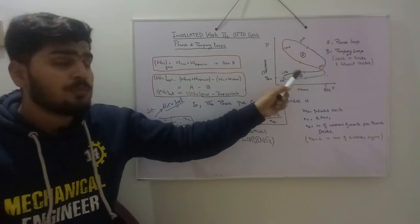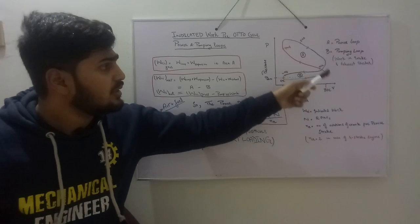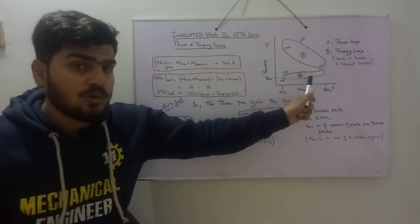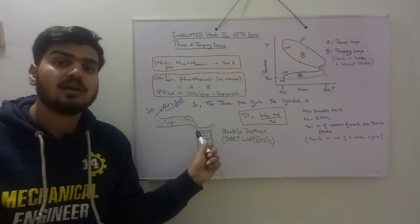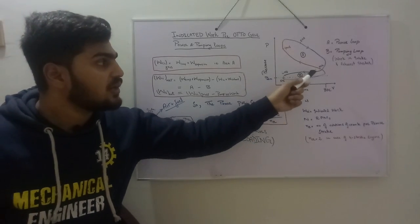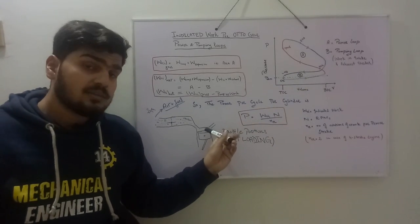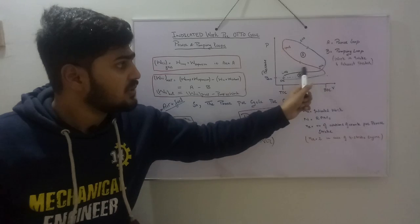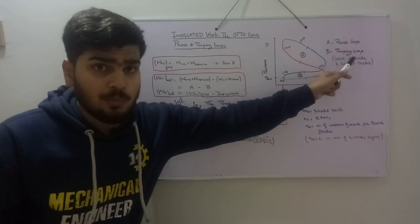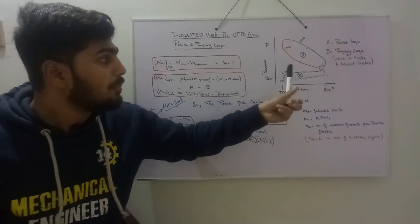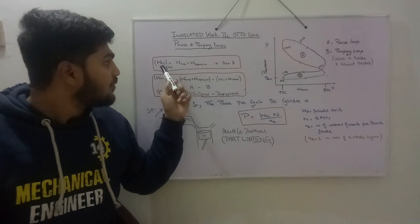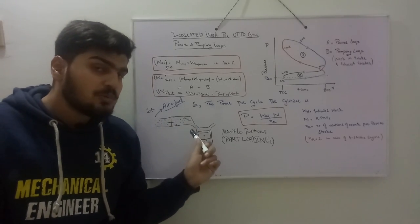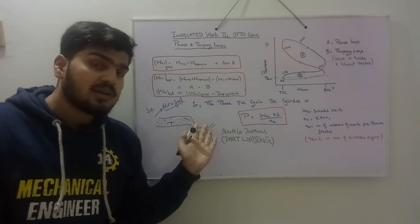In the real Otto cycle there are two additional strokes: the intake stroke and the exhaust stroke. The work during the intake stroke induces the air-fuel mixture into the cylinder, and the work during the exhaust stroke removes the burnt gases out of the engine. This is called the pumping work, and area B on the diagram refers to the pumping lobe. The pumping lobe is the energy taken from the gross indicated work to induce the air-fuel mixture and remove burnt gases.